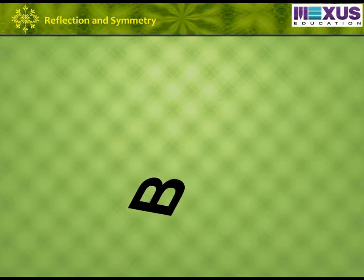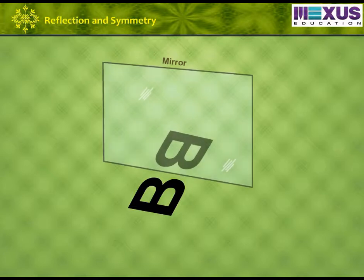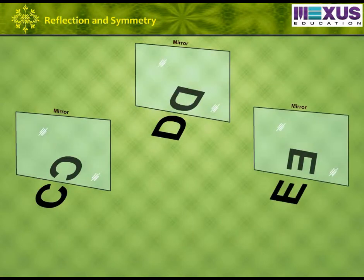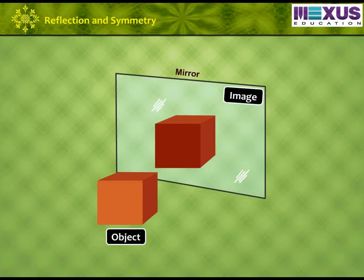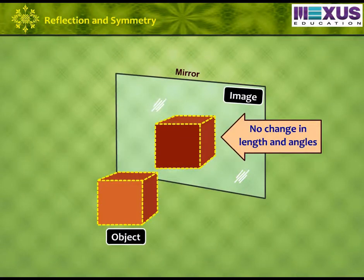Look at the letter B. Let us keep this letter in front of the mirror. Can you see some changes in the letter that appeared in the mirror? Yes, we can see that the letter B appears reversed in a mirror. Let us try some more letters. Letter C, D, E, and F. We see that all these letters appear reversed in a mirror. Also, when an object is reflected, there is no change in the lengths and angles. That is, the lengths and angles of the object and the corresponding lengths and angles of the image are the same.